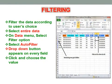Filter command of Excel is used to filter the data according to user's choice. The data which is not required at a particular point of time can be ignored by the user by use of filter command. To do filtering, select the entire data. On data menu, select the filter option, select auto filter. A drop down button appears on every field. Click and choose the value, click OK. The required data alone will be displayed on the screen.